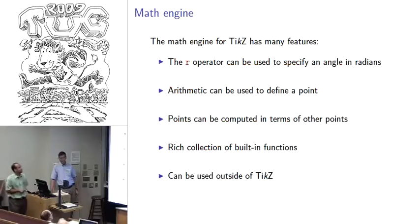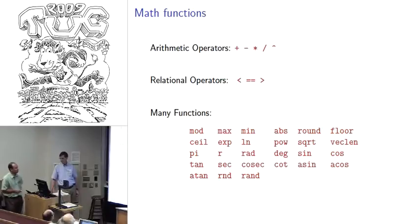The math engine is reasonably sophisticated. There's an R operator that you can use to specify angles in radians if you don't like to work in degrees. The arithmetic, which we've already seen, can be used to define points. You can actually do some point computation, so points can be computed in terms of other coordinates as well. There's also a rich collection of functions that are available to us, and more functions are being added with later versions. One of the things that's nice is that just like the iteration mechanism, the math engine can be used standalone. It can be used outside of TikZ as well if you're interested in doing some computation in TeX.